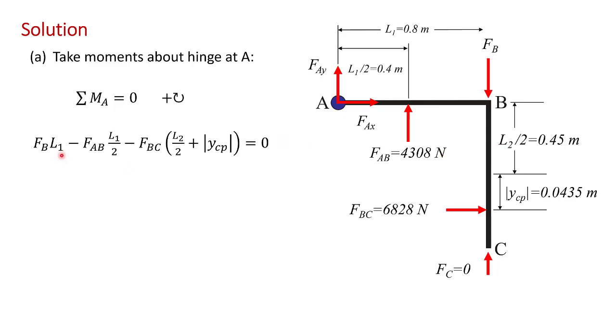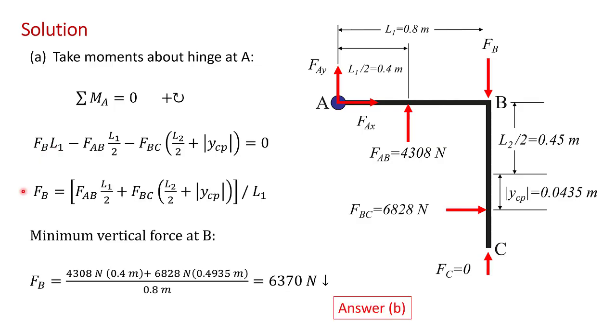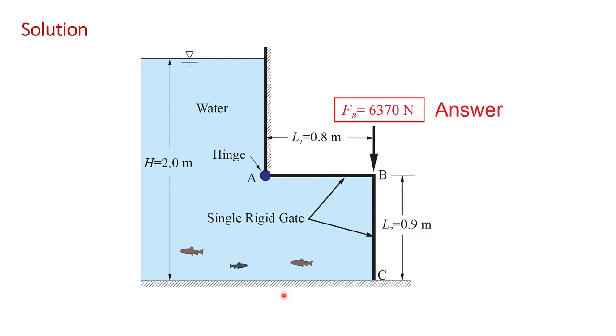We can solve this expression for the unknown force FB. So making the substitutions for the forces, we have FAB times its moment arm, 0.4 meters. FBC times its moment arm, which you can see, divided by the moment arm for FB, which is 0.8 meters. And we get that the minimum force required to hold the gate closed is 6,370 newtons downward. And that's the answer.